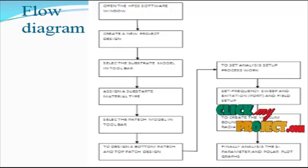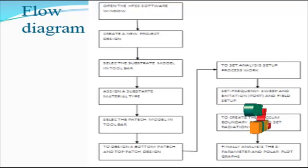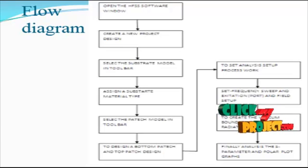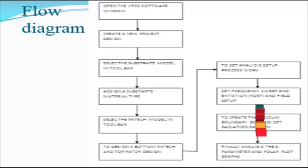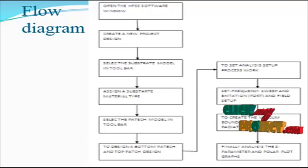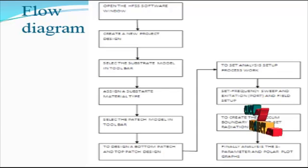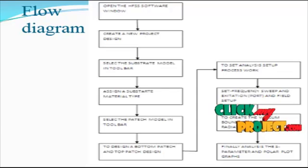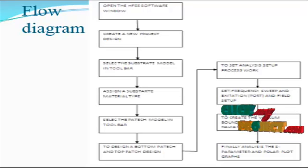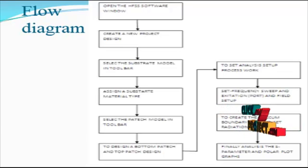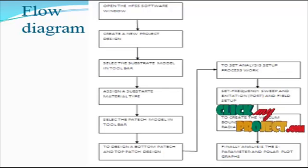First we open the HFSS software and create a new project design in our 3D model-based design. Then we create the antenna and choose the substrate model, analyzing the dielectric constant value, permittivity value, and dielectric substrate modeling type. We then select and create the shapes for our substrate model — for example, circular, rectangular, square, or triangular substrate models used in HFSS modeling designs.